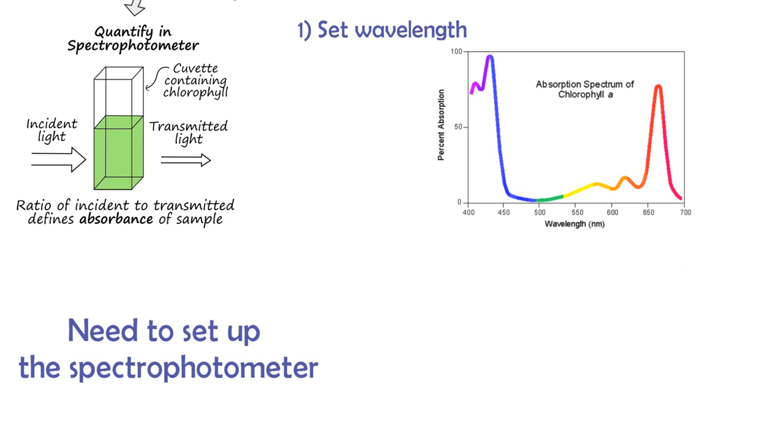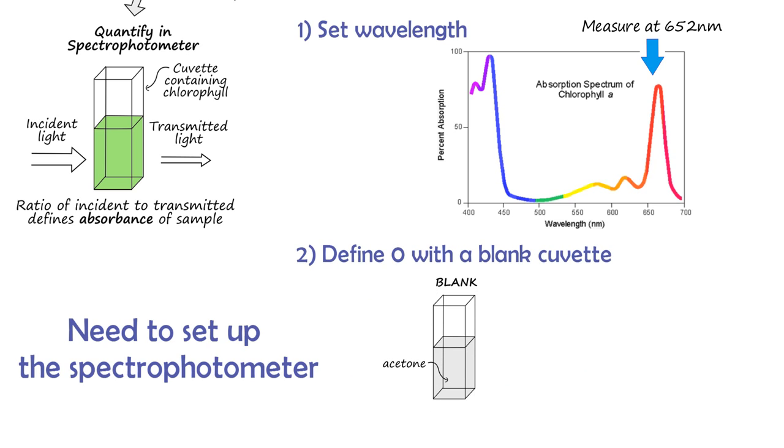Chlorophyll absorbs strongly in the red range, so we're going to use a wavelength of 652 nanometers. We'll set the spec to this wavelength and then put a solution of 80% acetone into the machine. We know this doesn't contain any chlorophyll, so we can define that as zero.